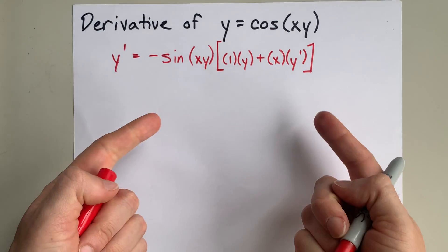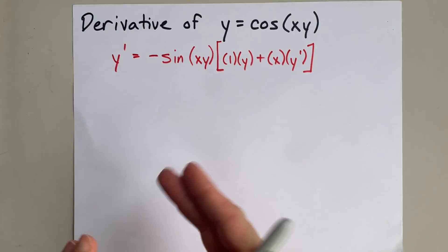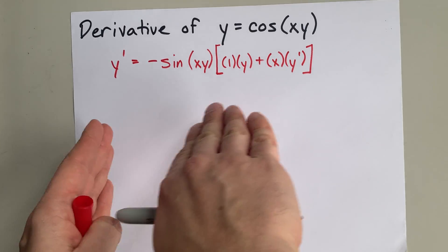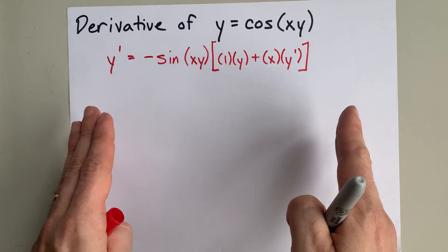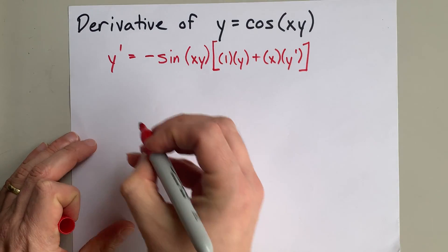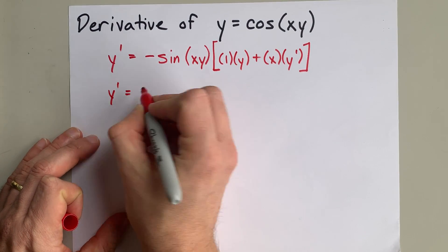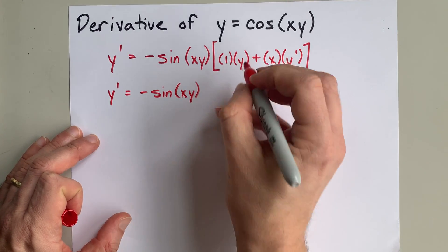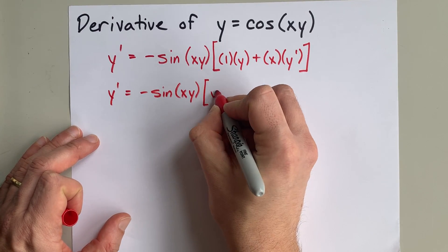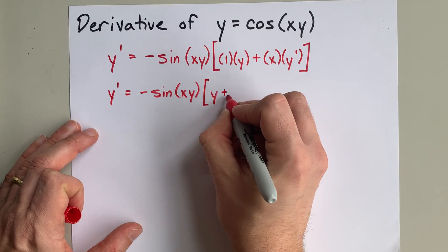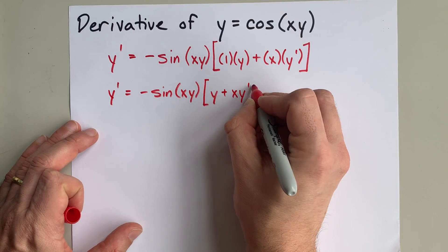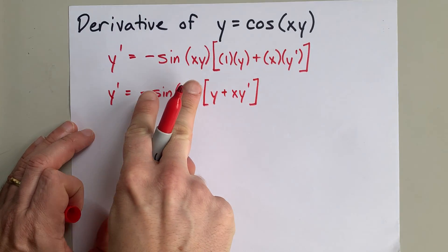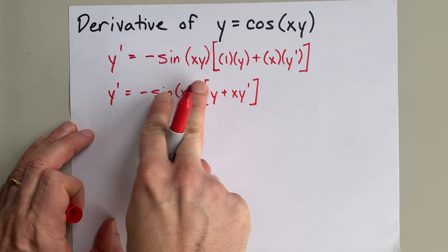Ideally we'll be able to separate out the y primes on one side of the equation, so we get an expression for the derivative only in terms of x and y, not y prime itself. Before I do that, I'm just going to clean up what's in these square brackets here. 1 times y is just y, and I also have x y prime in there as well. I'm going to multiply negative sine xy through this bracket.